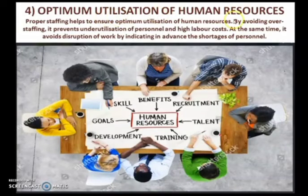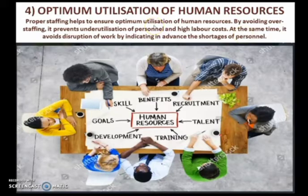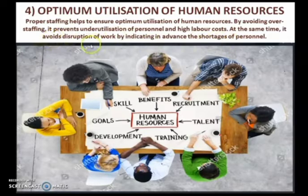Next is optimum utilization of human resources. Proper staffing helps to ensure optimum utilization of human resources. By avoiding overstaffing, it prevents underutilization of personnel and high labor cost. At the same time, it avoids disruption of work by indicating in advance the shortage of personnel. Through the process of staffing, we can determine how many persons are required for a particular work. Both overstaffing and understaffing are not good — overstaffing leads to unnecessarily high labor costs, while understaffing causes work disruption. There should be an adequate and optimum number of staff in an organization.